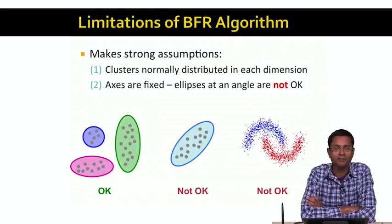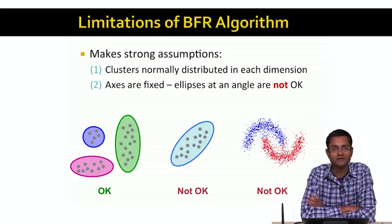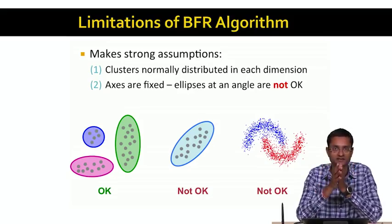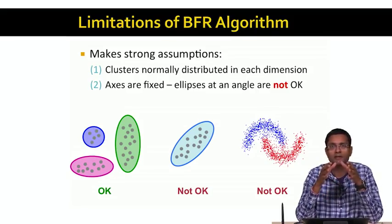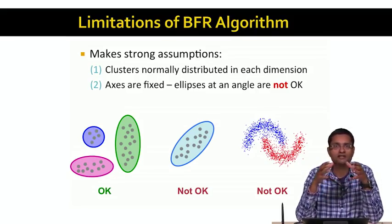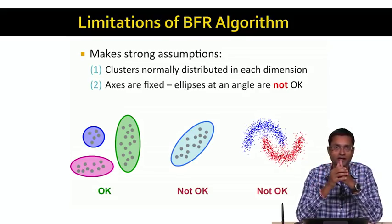We've looked at the BFR algorithm, or the Bradley-Fayad-Rainer algorithm, in the last lecture for clustering very large data sets that don't fit in memory. The BFR algorithm is great because you can scan the data in one pass and obtain clusters. The problem, though, is that the BFR algorithm makes very strong assumptions about the data and about what the clusters look like.